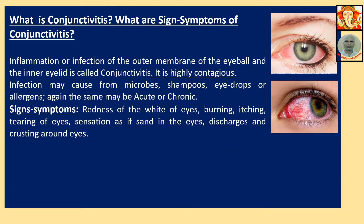Conjunctivitis is inflammation or infection of the outer membrane of the eyeball and the inner eyelid. It is highly contagious. Infection may come from microbes, shampoos, eye drops, or allergens, and may be acute or chronic. Signs and symptoms include redness of the eyes, burning, itching, tearing, sensation as if sand is in the eyes, and discharges with crusting around the eyes.